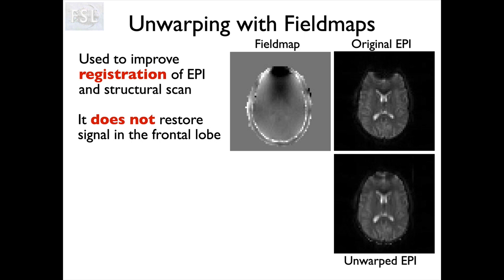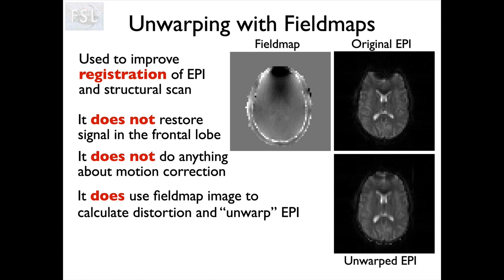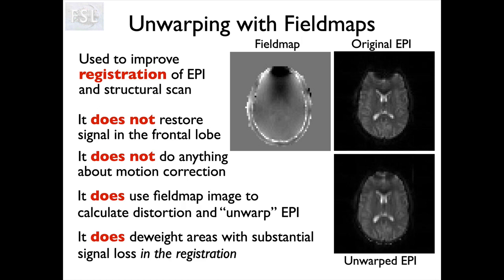Signal which is lost at acquisition is gone forever — there are fixes you can do at the acquisition level to minimize it, but once you've acquired the image, that's it. We're also not going to worry about very subtle changes in the field map when the head moves, as that's a second-order effect compared to the static field deviation we're correcting for. We use the field map to unwarp geometric distortions and also to de-weight areas of signal loss during registration — telling it to ignore those areas because we know we can't get a good match there.